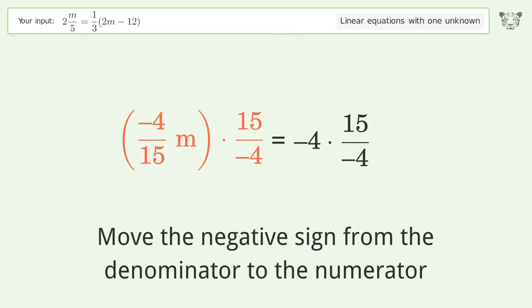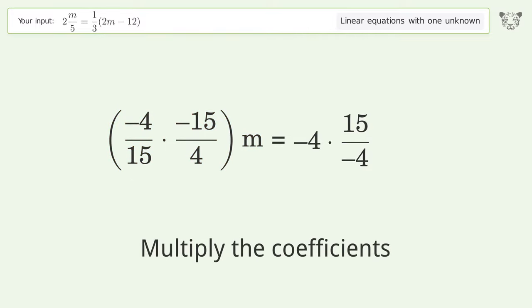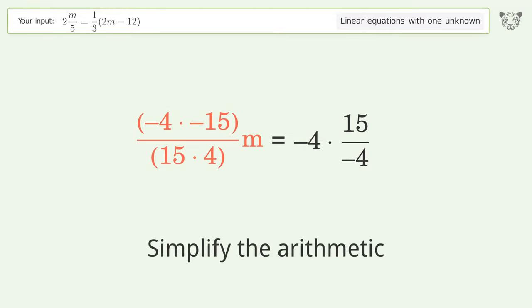Move the negative sign from the denominator to the numerator. Group like terms. Multiply the coefficients. Simplify the arithmetic.